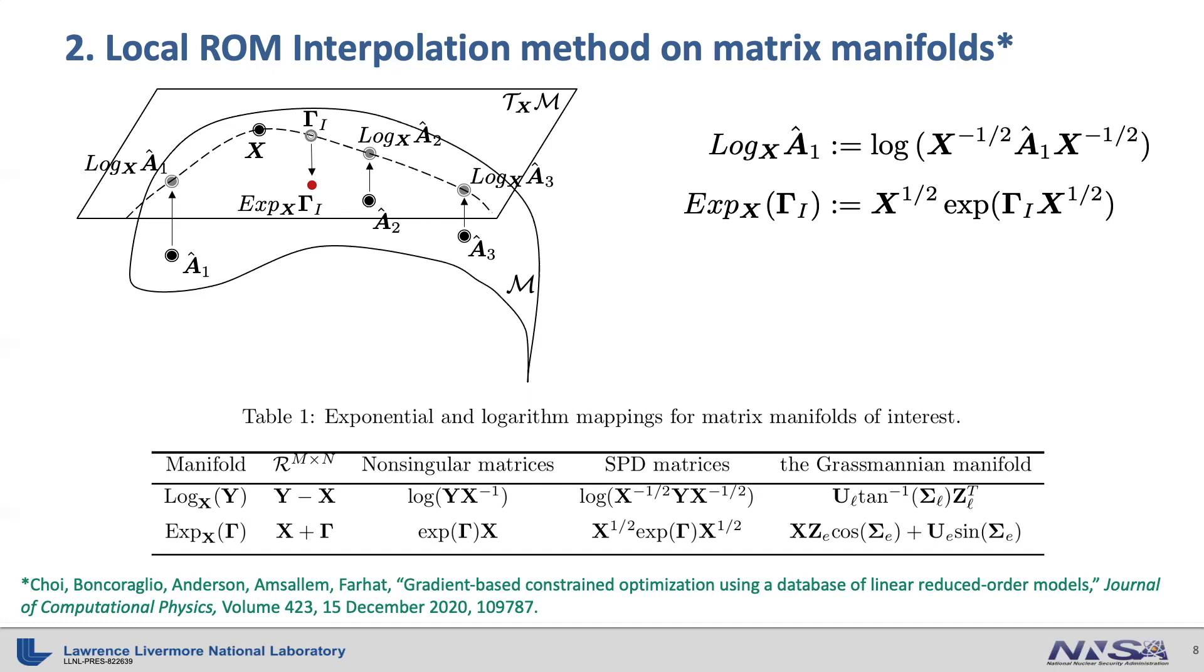The technical detail about how you determine where to build local reduced order models are described in the JCP paper indicated at the bottom here.